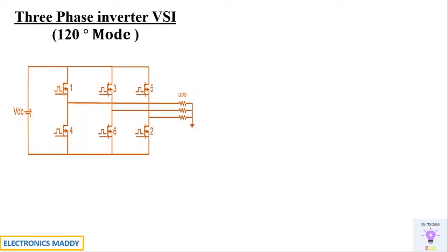One of the major differences is that in this case there are only two switches conducting at a time, whereas in case of 180 degree mode of operation there are three switches conducting at a time.